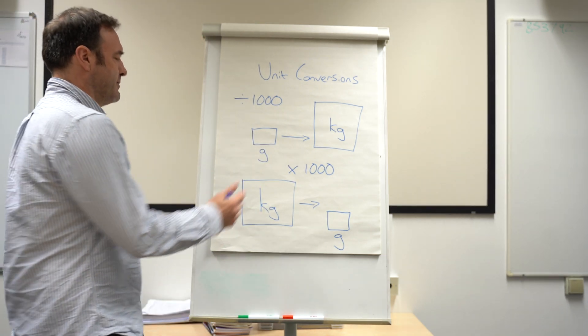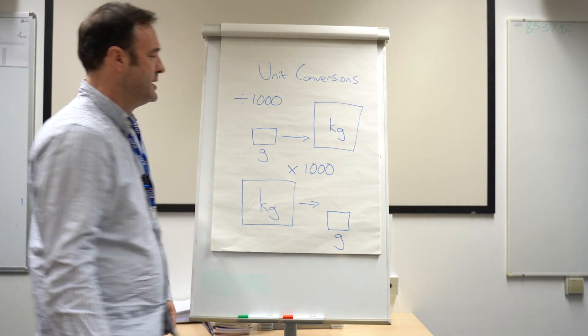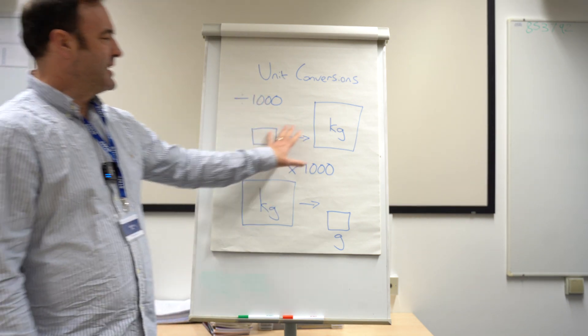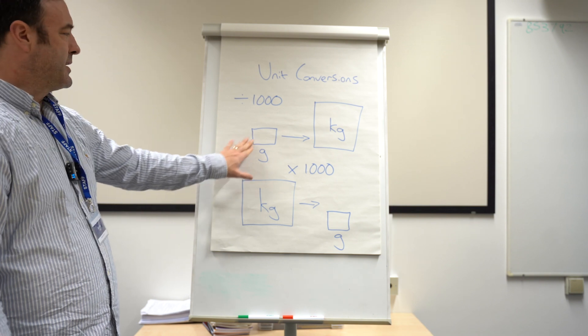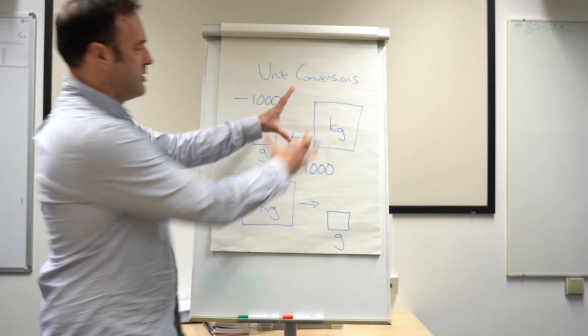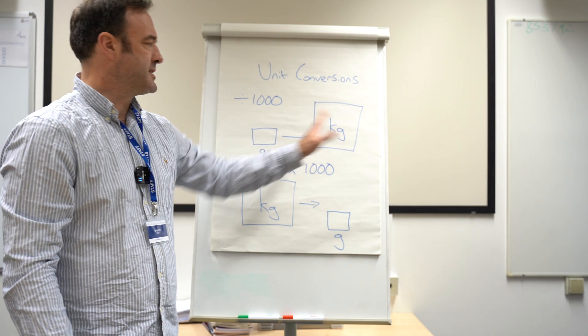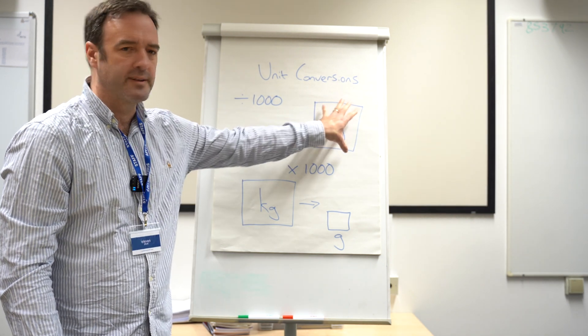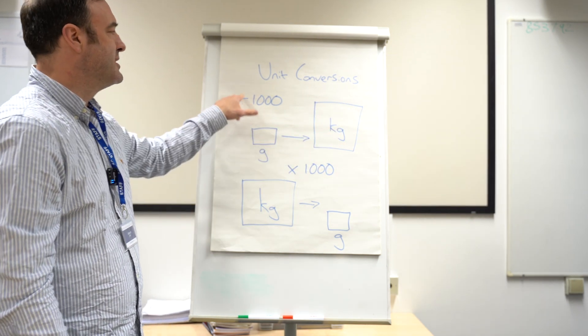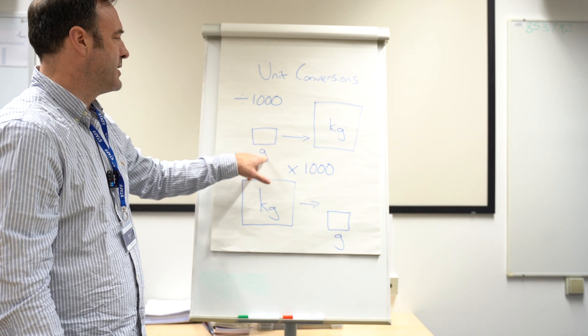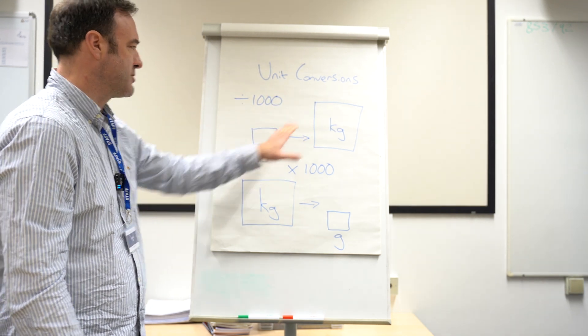So if we were going to go from grams to kilograms, I always get the kids to look at a diagram like this. We're going from a small unit to a large unit like kilograms. If we were going to convert something, we would end up with less of these because they're bigger, so we would divide. And we would divide by 1000 because there's 1000 grams in a kilogram.